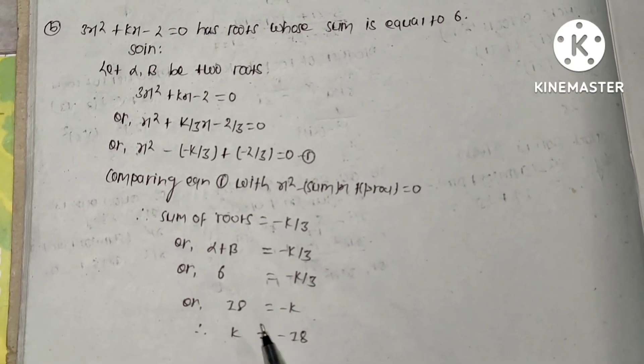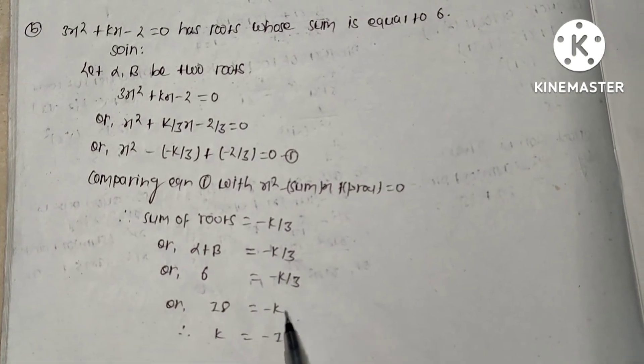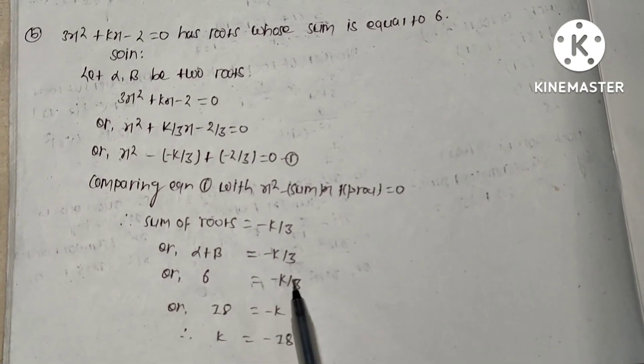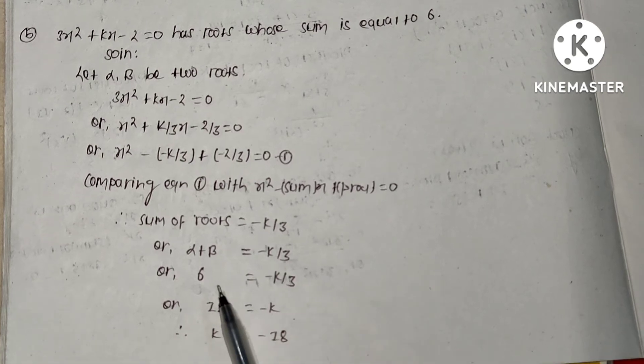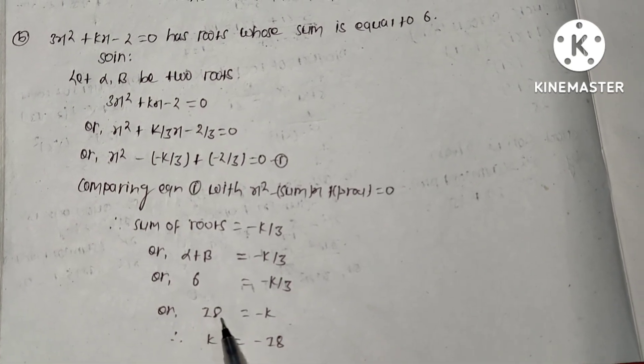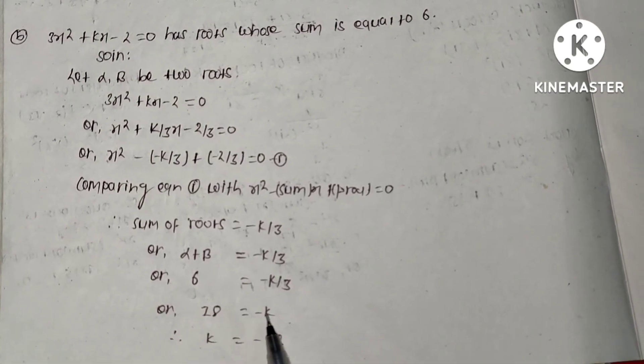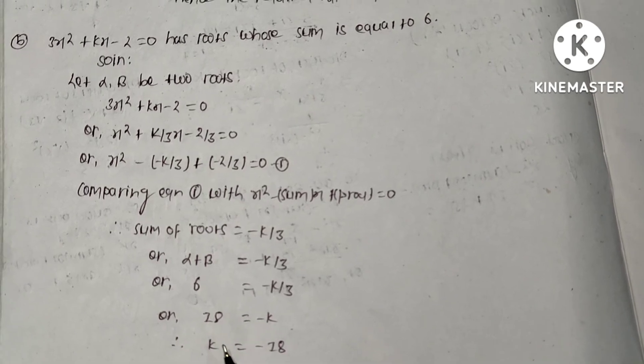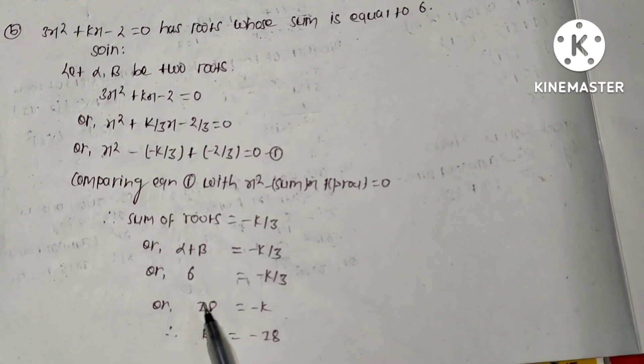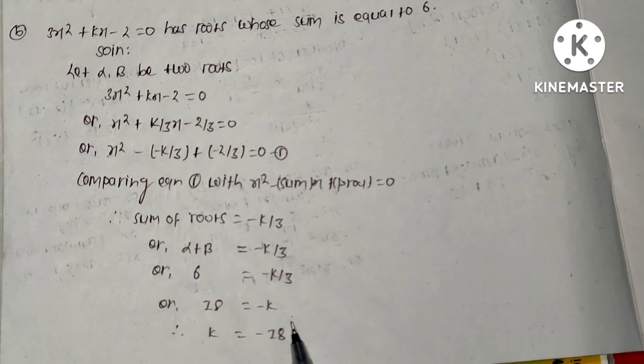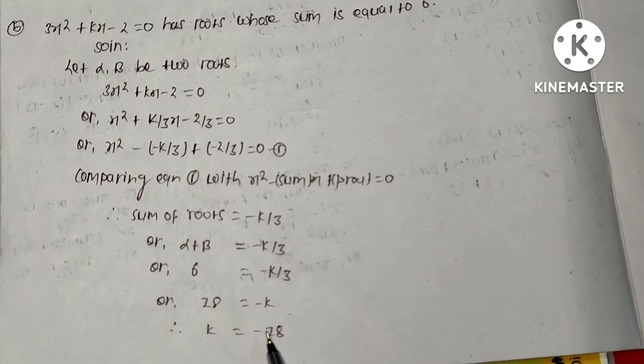In this way we get the value k = -18. Here 6 = -k/3, so 6 is multiplied by 3 and becomes 18 = -k. When -k is shifted to the left hand side it becomes positive, and 18 is shifted to the right hand side and becomes negative, giving k = -18. Thanks for watching this video.